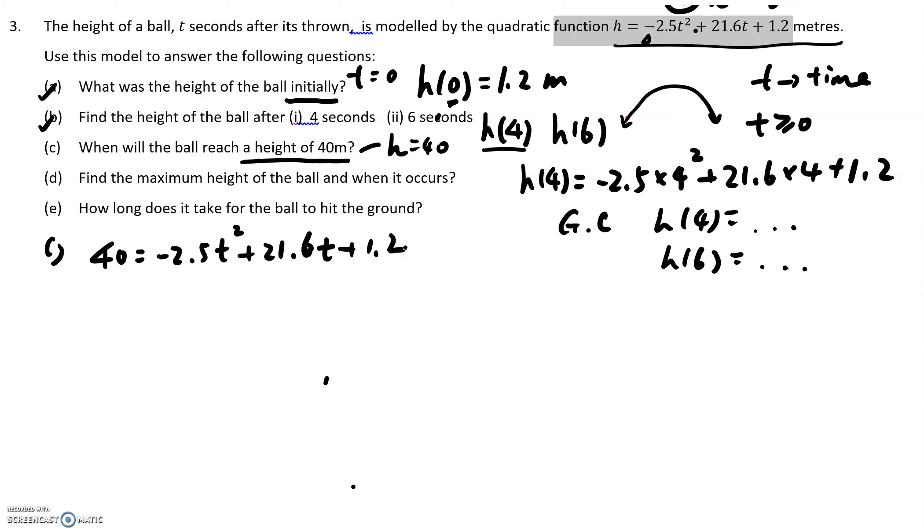This looks really complicated, but if you take 40 on both sides, make it a new quadratic equation. Negative 2.5 t to the power of 2 plus 21.6 t, take away. So if you take 40 on both sides, that's going to be negative 38.8 equal to 0. So what you then do is put this one into your graphic calculator and then using the polysolve to get your two roots, which is t1 and t2.